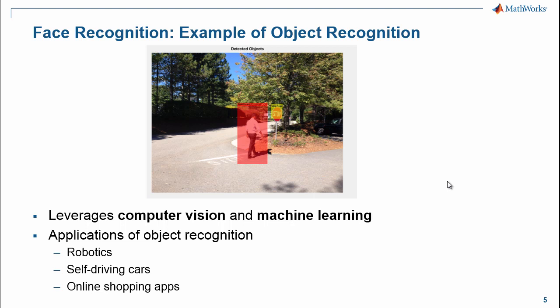Object recognition leverages techniques from computer vision and machine learning, and has applications in robotics, where it's used to help navigate to known checkpoints like charging stations. In self-driving cars or driver assistance systems, object recognition is used to detect pedestrians and traffic signs. In this webinar, I will be using face recognition as the example, but the techniques I show you are useful in solving other object recognition problems as well.